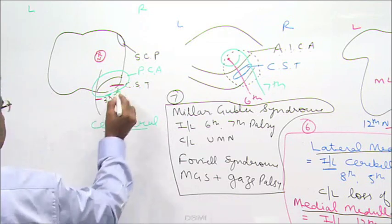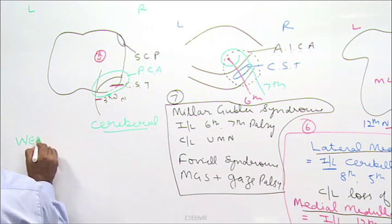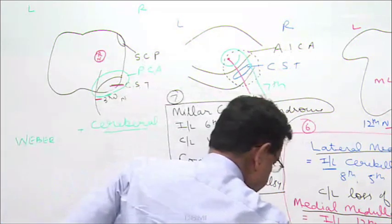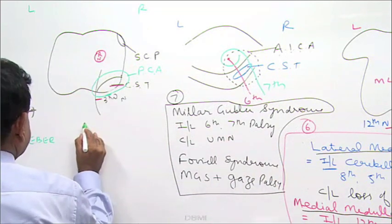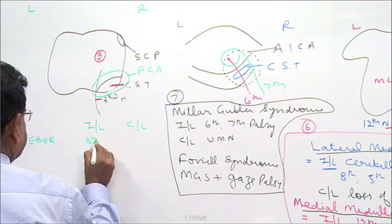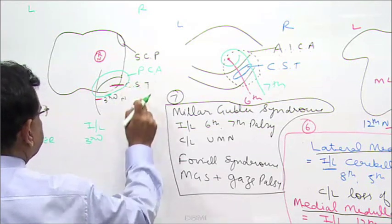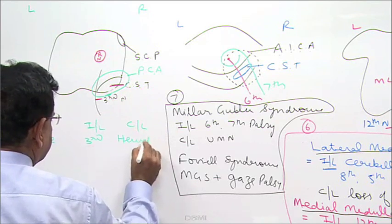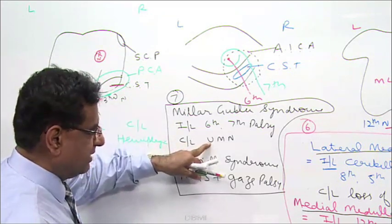This is known as Weber syndrome. Weber syndrome presents with ipsilateral third nerve palsy and contralateral hemiplegia, because of involvement of the corticospinal tract. So: ipsilateral third nerve palsy and contralateral hemiplegia is Weber syndrome.